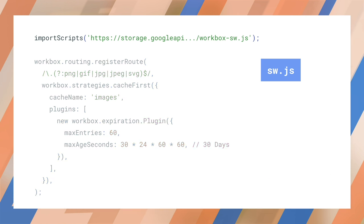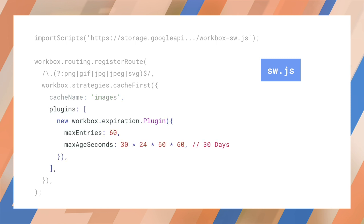We start by importing the library in our service worker from a CDN. Then we establish a route for all our image files. Next, we configure a cache-first strategy that will pull images from the cache before going to the network. Other strategies are also available depending on your use case. We call this cache 'images', and finally we can configure the cache to only hold 60 images, automatically removing old ones for new ones so that the cache never overfills. We can also set cached images to expire — in this case, after 30 days.